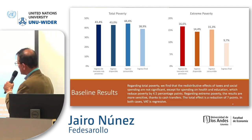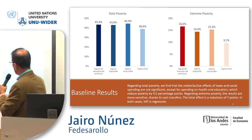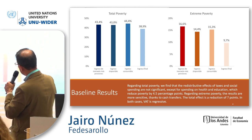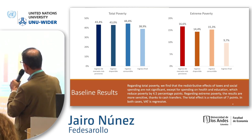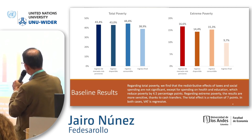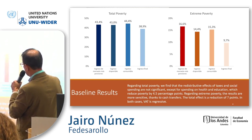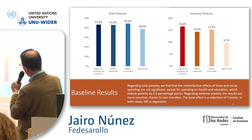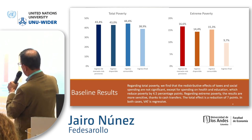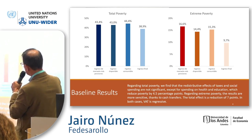These are the main results. Regarding total poverty, we find that the distributive effects of taxes and social spending are not significant — except for spending on health and education, which reduce the initial poverty from 43.4% to 38.9%.